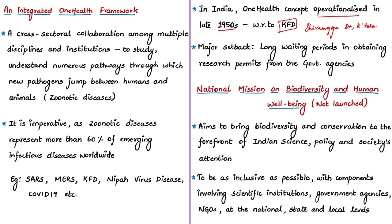The authors call on government agencies, private sector, and stakeholders from multiple disciplines to come together to fight zoonotic diseases. However, there is a long waiting period in obtaining research permits from government agencies, which is likely to hamper India's potential for cross-sectoral rapid response to emerging infectious diseases. The authors also link this concept to the National Mission on Biodiversity and Human Well-being, whose one component explicitly links biodiversity to human health through the One Health framework.